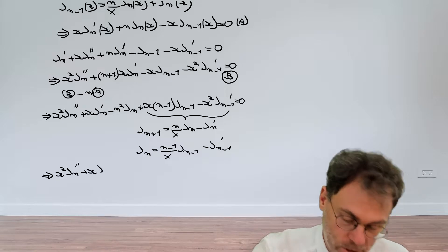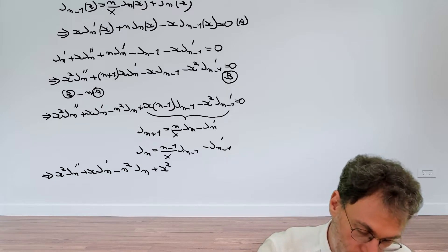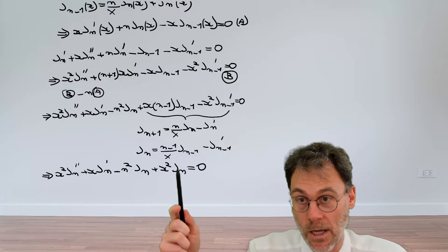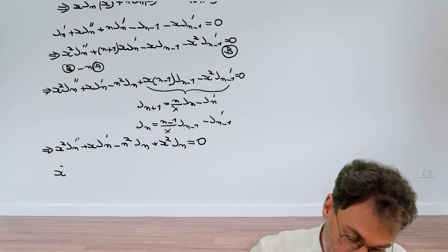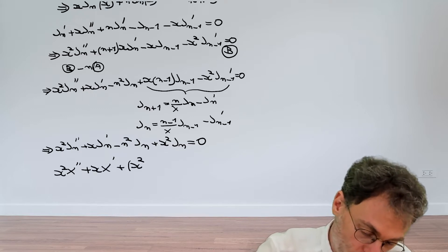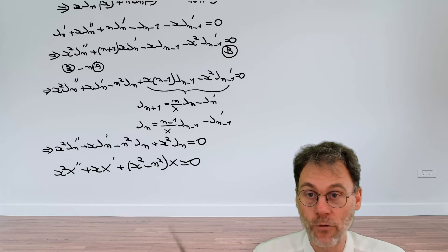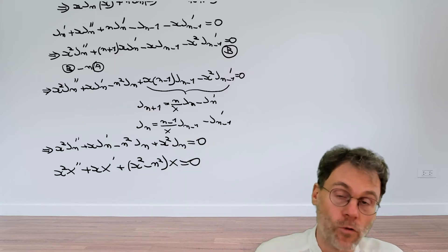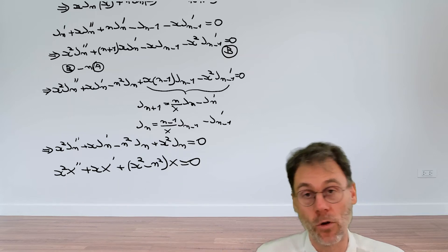Substituting that recurrence relation allows us to replace the J_{n-1} terms, and after simplification we obtain: x² J_n'' + x J_n' - n² J_n + x² J_n = 0. This is exactly Bessel's differential equation, which states: x² y'' + x y' + (x² - n²) y = 0. This shows that the Bessel function defined via the generating function also satisfies Bessel's differential equation, proving the two definitions are equivalent.